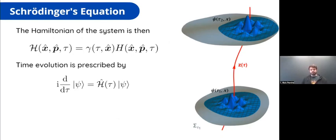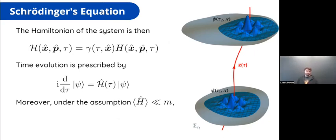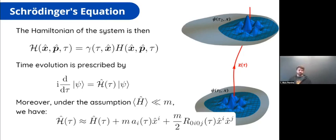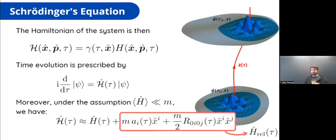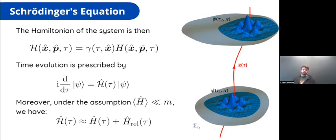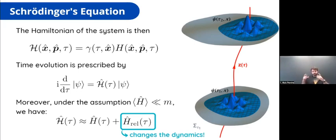With this, we're ready to write down Schrödinger's equation. There are details about the self-adjointness of this Hamiltonian in the paper. What matters here is that if we assume the non-relativistic energy of the system is much smaller than its rest mass, then we can approximate the redshift factor such that the final Hamiltonian is the original Hamiltonian with adaptations of X, P, and proper time, plus two correction terms that are functions of the acceleration of the curve and the curvature of spacetime. We label these H_rel for the relativistic correction Hamiltonian.